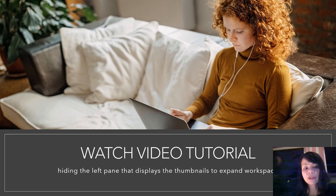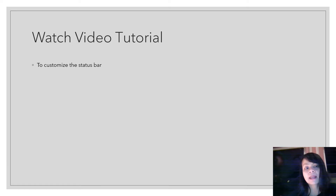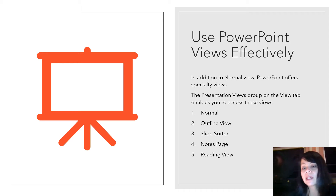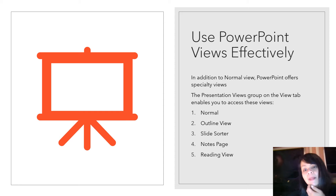Please go watch the video tutorial on hiding the left pane that displays the thumbnails so you can expand your workspace, and also watch the video tutorial on customizing the status bar. Next, let's look at using PowerPoint views efficiently. In addition to normal view, PowerPoint also offers specialty views. The presentations view group on the View tab gives you access to normal, outline, slide sorter, notes page, and reading view.